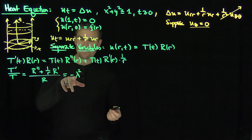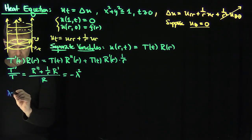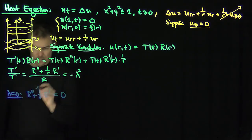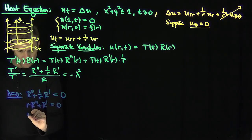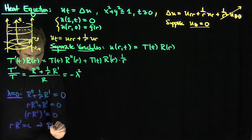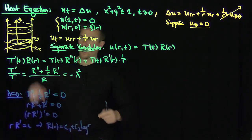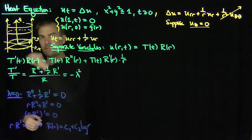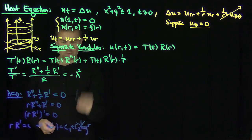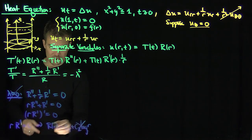There are two cases to rule out. If lambda equals 0, then R'' + (1/r) R' = 0, which gives r R' = constant c, so R(r) = c₁ + c₂ log(r). Since log(r) blows up at r = 0, we can't have an infinite temperature at the origin. Also, a constant can't satisfy R(1) = 0. So there are no solutions consistent with the boundary conditions when lambda equals 0.